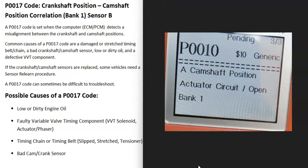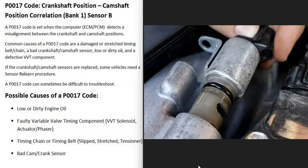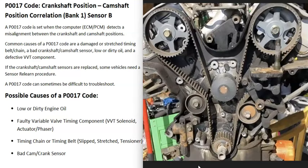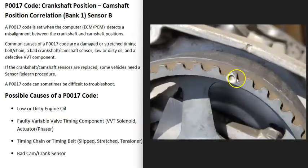If you're getting other codes, pay attention to those as well. Another cause is a bad timing chain or timing belt. All the camshafts and the crankshaft need to line up correctly. The engine has timing marks at the camshaft and on the crankshaft, and all those marks need to align. If one gets off — for example, if a timing belt slipped a little — it will throw everything off and cause problems.